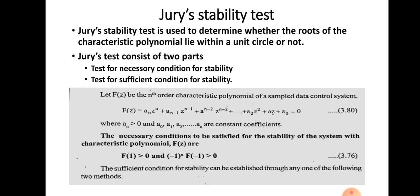Let us analyze the stability of the sample data control system using Jury's stability test, which is in your syllabus. Jury's stability test is used to determine whether the roots of the characteristic polynomial lie within the unity circle or not. We will conduct the Jury's test in two parts: first we check the necessary condition for stability, then we check the sufficient condition for stability.